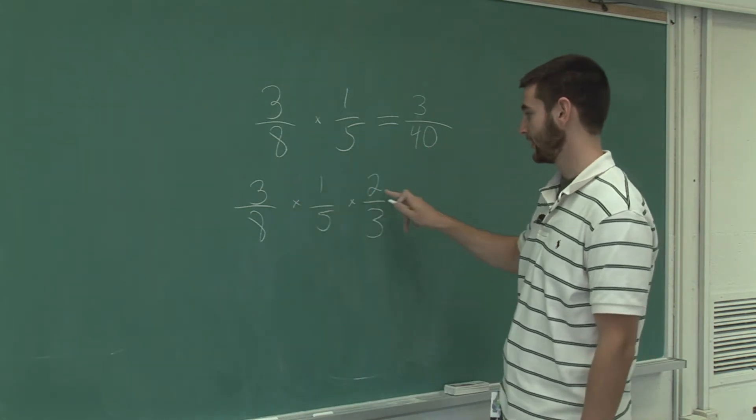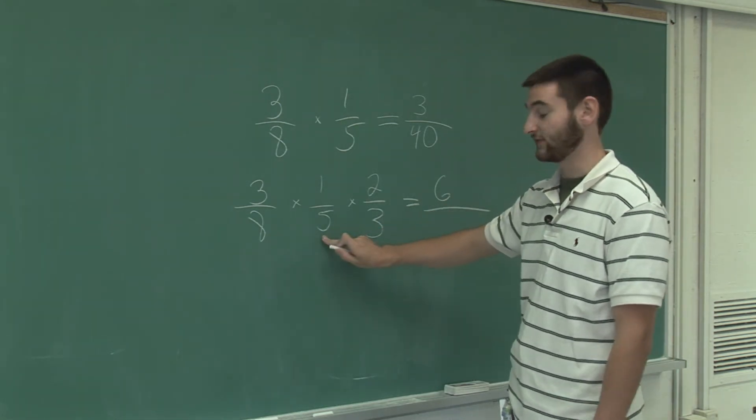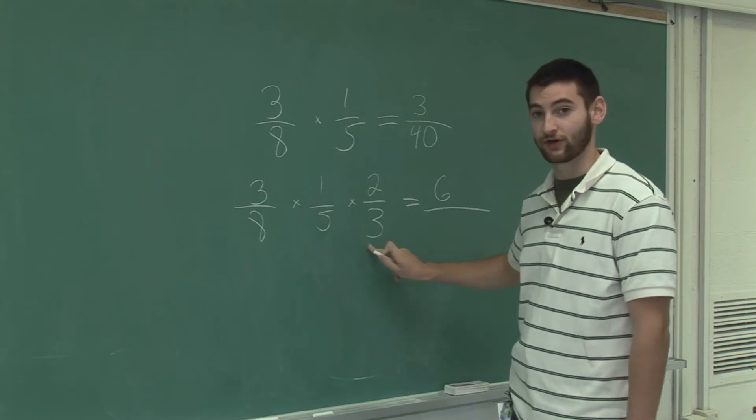Three times one times two is six. Eight times five is forty, times three is 120.